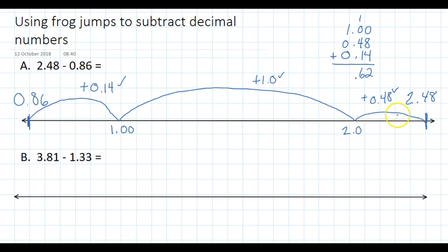Then I can just add on the 0.48 to get me to 2.48. The next important thing to remember is to write down the size of your hops and the numbers you're landing on.